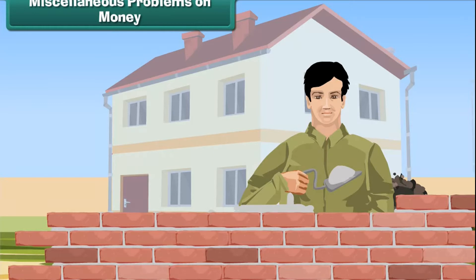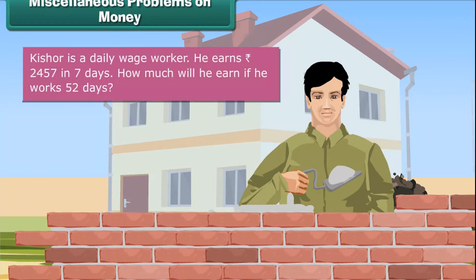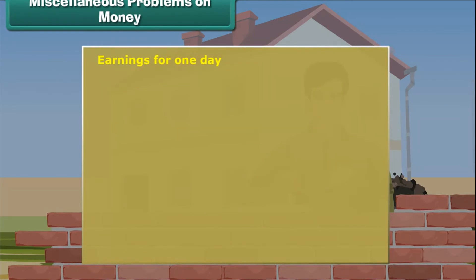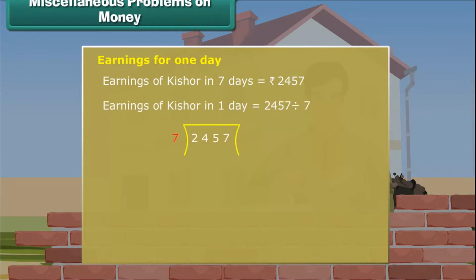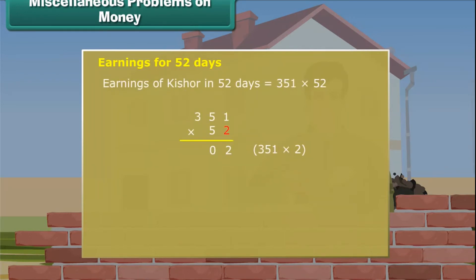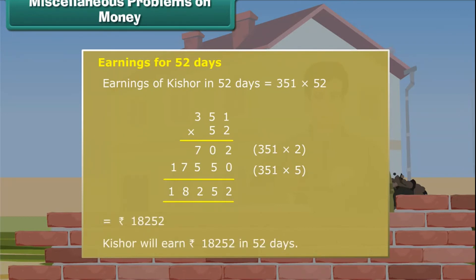Miscellaneous Problems on Money. Let us apply both concepts together in solving money problems. Kishore is a daily wage worker. He earns 2,457 rupees in 7 days. How much will he earn if he works 52 days? First, we work out the earnings of Kishore for 1 day. Earnings in 7 days is 2,457, so earnings in 1 day is 2,457 divided by 7, which equals 351 rupees. Earnings in 52 days is 351 multiplied by 52, which equals 18,252 rupees. Therefore, Kishore will earn 18,252 rupees in 52 days.